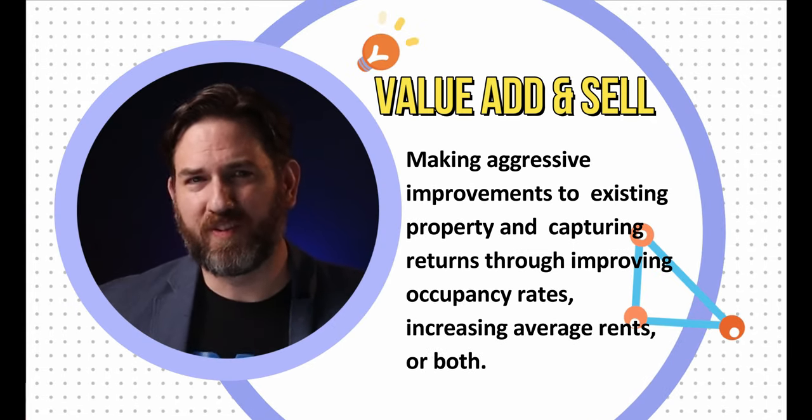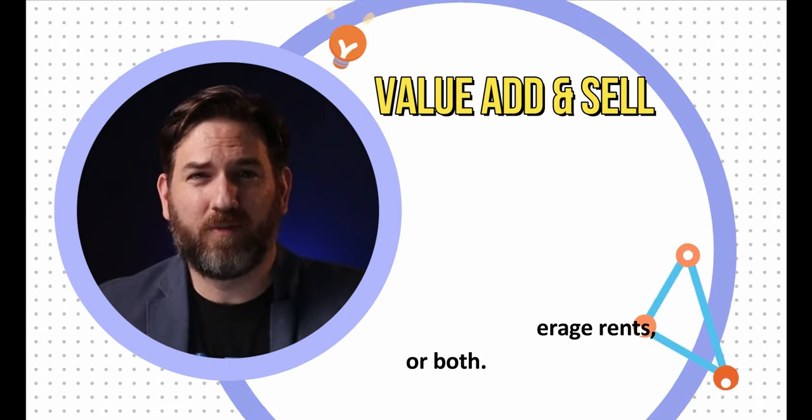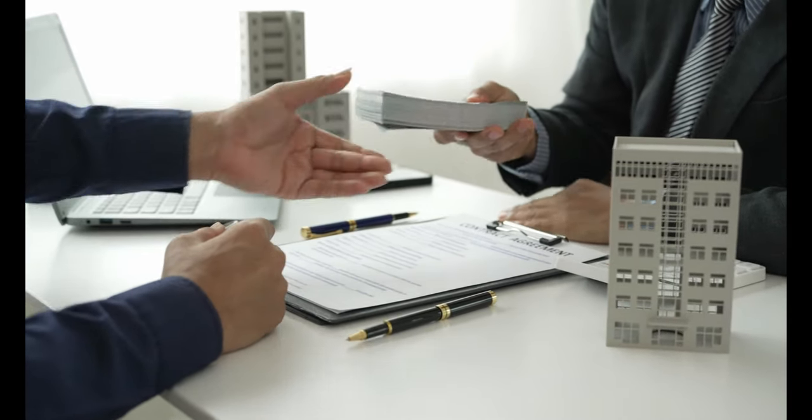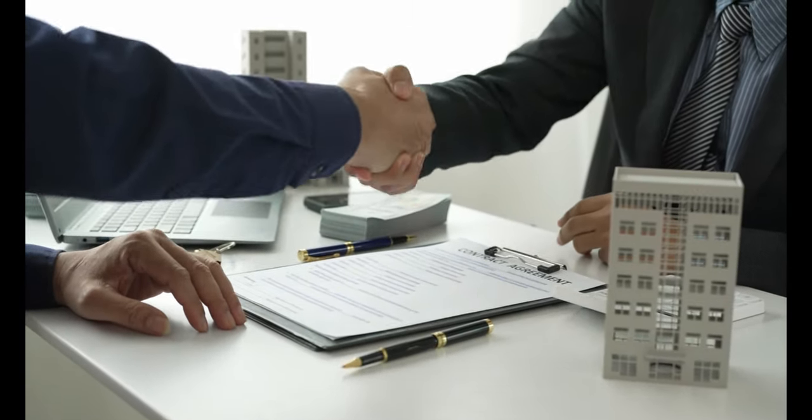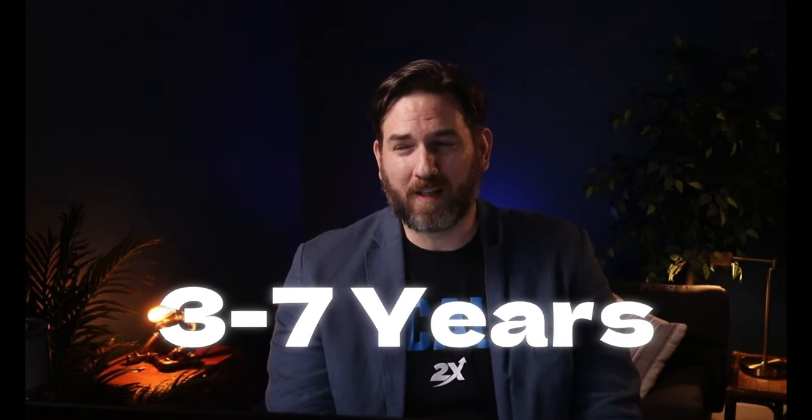The second strategy is value-add and sell. You find a property that has some physical, financial, or management stress, and you improve the property and increase its value by taking over management — maybe the prior owner didn't have good management in place, or the property was run down and couldn't command top rents. You improve the operation, stabilize the property, and then sell it several years later at a premium. It's like creating a turnkey business for a bigger buyer. The hold period in these situations is typically three to seven years.